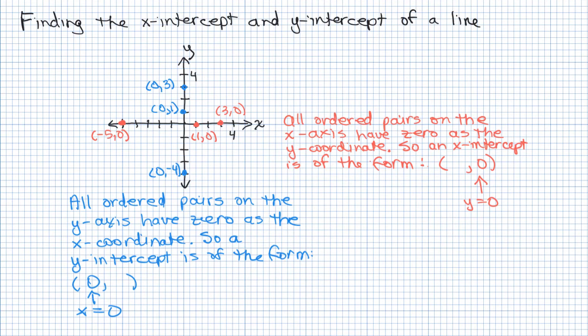And now let's look at the y-axis. I have three ordered pairs: (0, 3), (0, 1), and (0, -4), and they all have 0 for their x-coordinate, right? So y-intercepts are of the form, well, there's a 0 in for x and then some number for y.